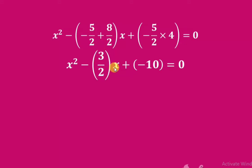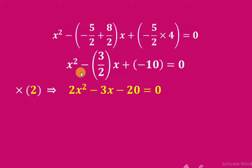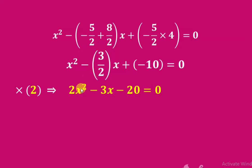Since 3/2 is not an integer coefficient, we multiply the entire equation by 2 to obtain integer coefficients. Therefore, our required quadratic equation is 2x² - 3x - 20 = 0, which has integer coefficients as required.